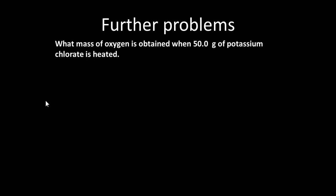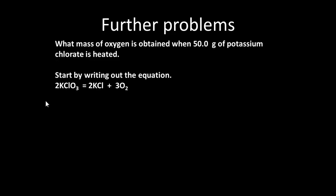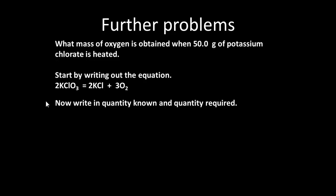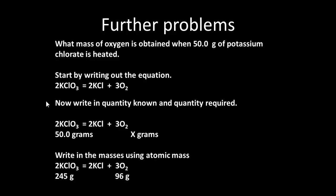We heat potassium chlorate and we'll get off oxygen. So if we've got 50 grams of potassium chlorate, how much oxygen do we get as a mass? Write out the equation: 2KClO₃ gives 2KCl plus 3O₂. The quantity we know is 50 grams of potassium chlorate, and the quantity required is the three lots of oxygen. From atomic masses, 245 grams of potassium chlorate would give us 96 grams of oxygen.